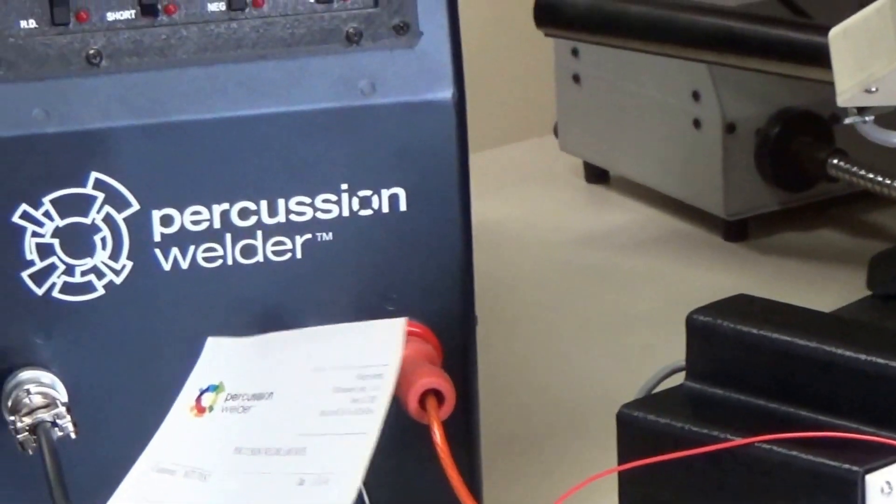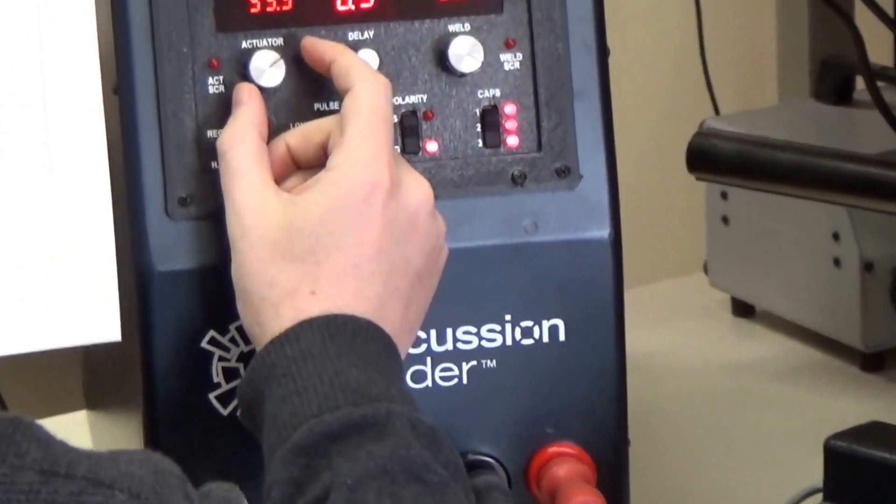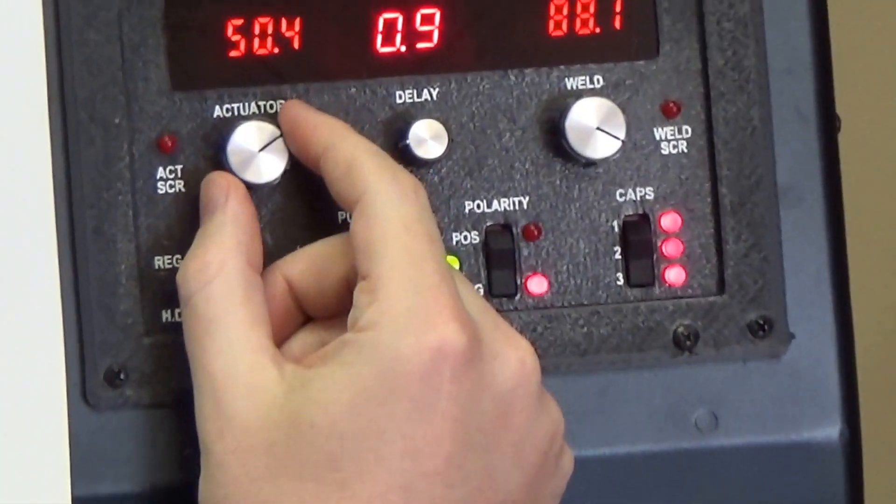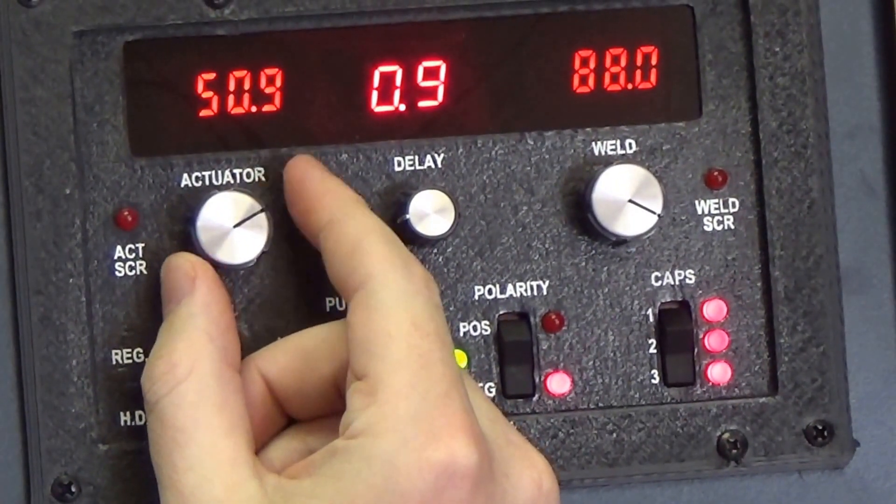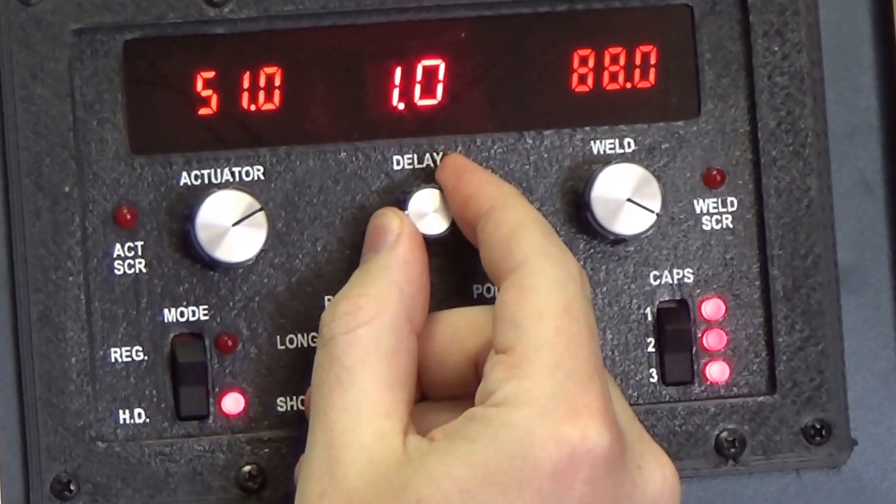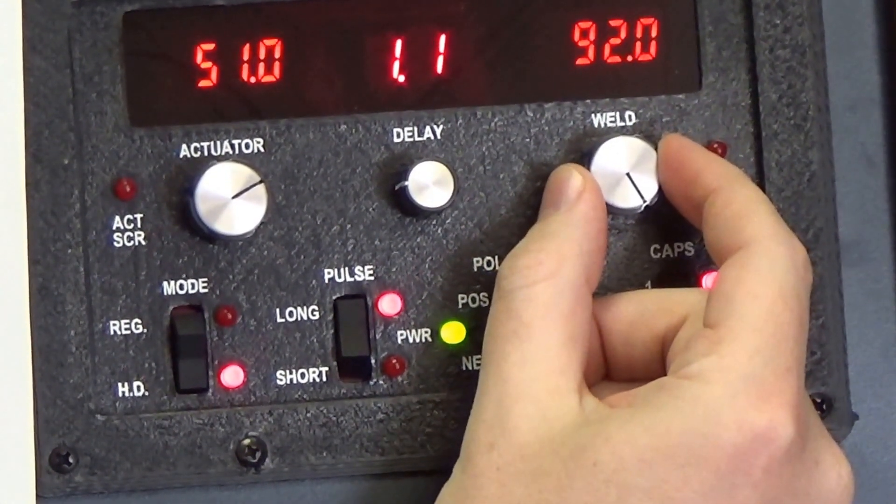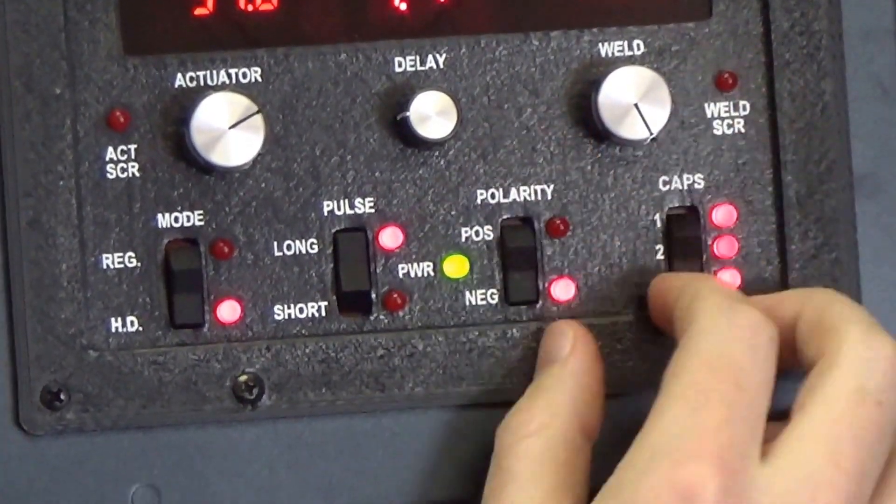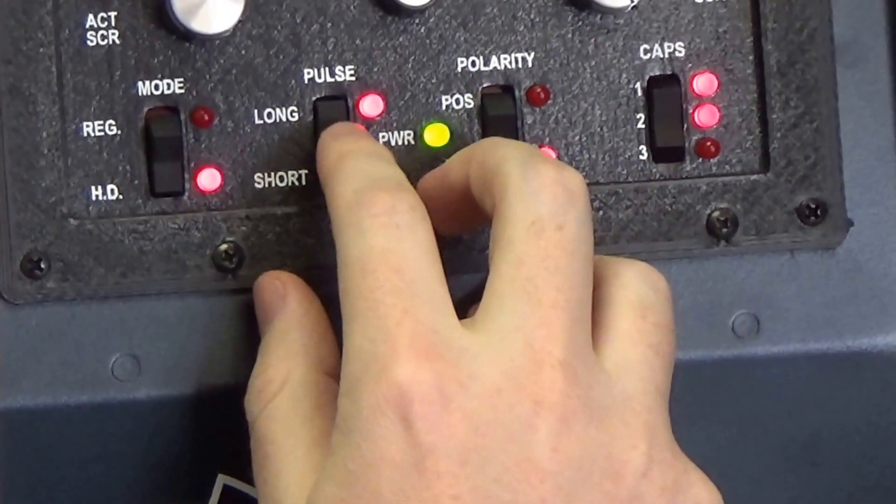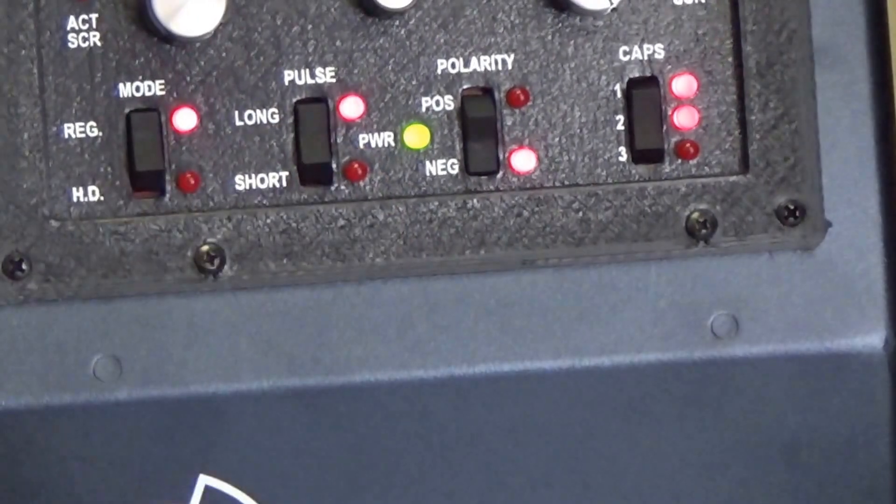Now I'm going to set my weld schedule: 51 volts for the actuator, 1.1 millisecond delay, 93 volts for the weld panel, 2 caps, negative polarity, long pulse, regular mode.